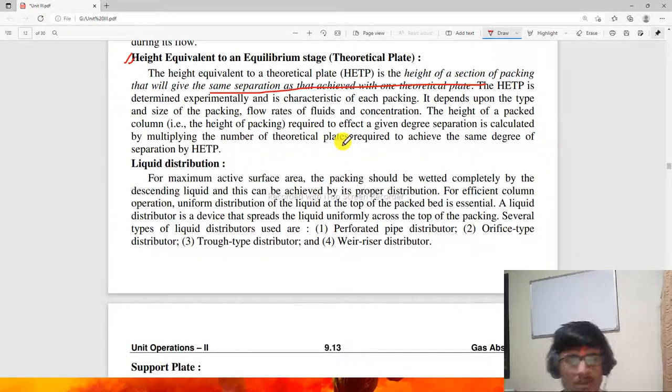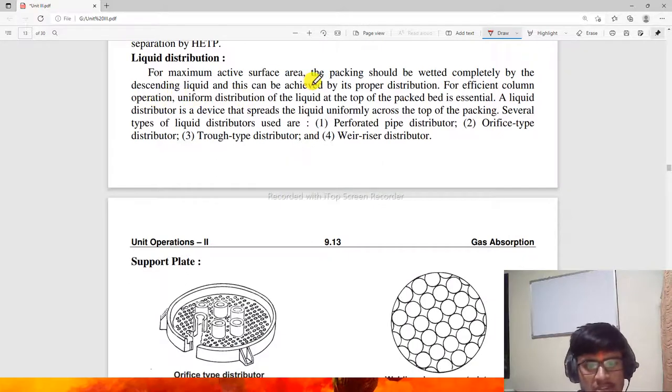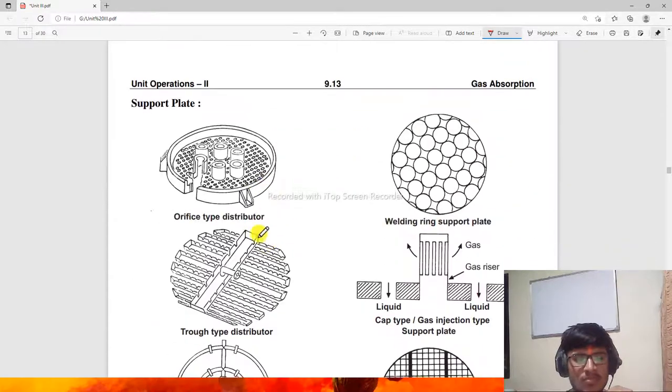For maximum active surface area, the packing should be wetted completely by the descending liquid, and this can be achieved by proper distribution. Efficient column operation requires uniform distribution at the top of the packing. Several types of liquid distributors are used: perforated pipe distributor, orifice type distributor, and weir type distributor.